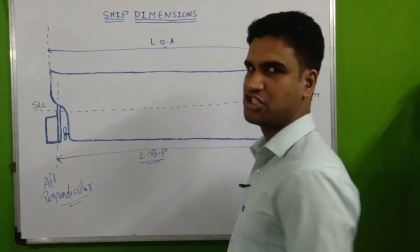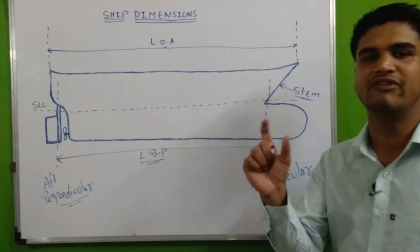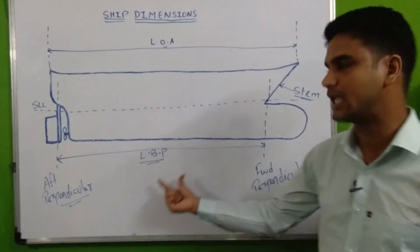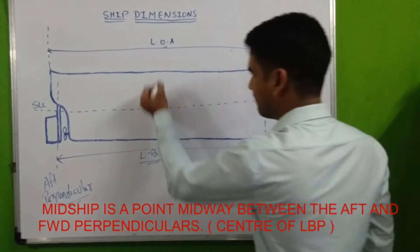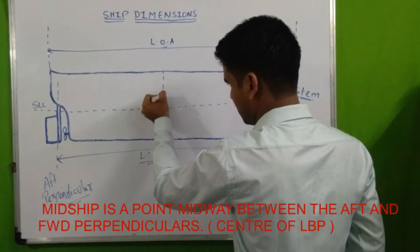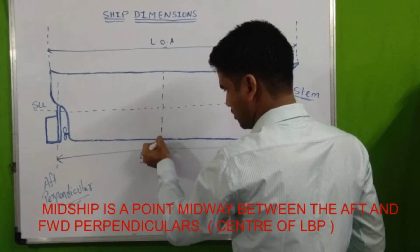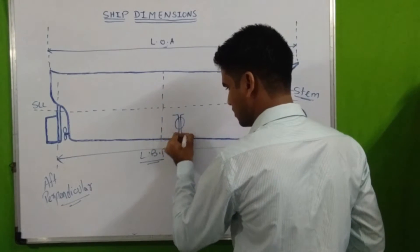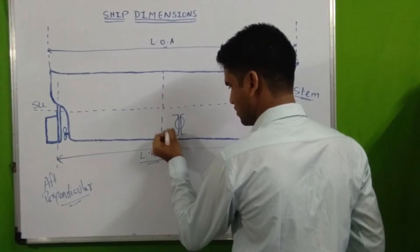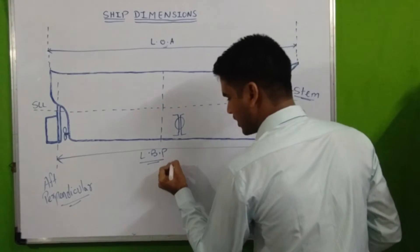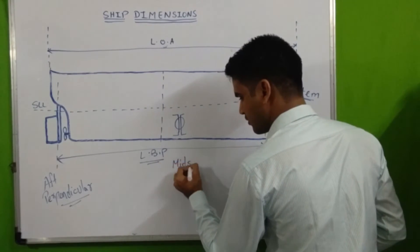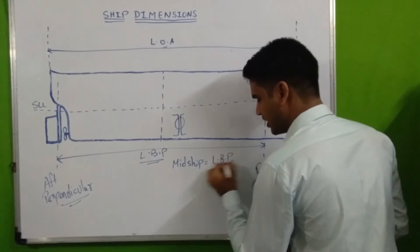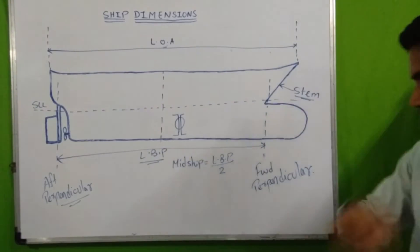Next is midship. Midship is a point midway between the aft perpendicular and forward perpendicular, or you can say it is the center point of LBP. The symbol of midship is a circle with a cross. Midship can be calculated as LBP divided by 2.